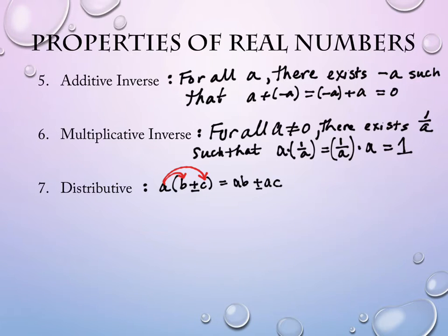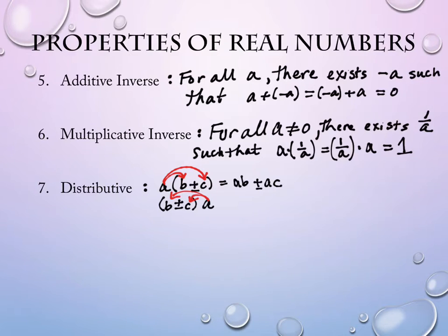It doesn't matter whether the A comes before the addition and subtraction or after it. If it had been written as B plus or minus C times A, I could still multiply through and get the same result. So it doesn't matter if it occurs before or after the addition or subtraction.